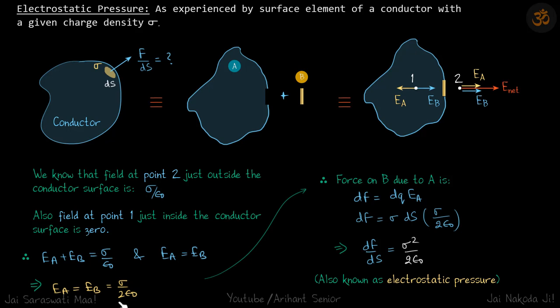This tells us the electric field acting on the small surface element. Now we can write the force on B. The force on element B due to field from A is dq times E_A. Writing dq as sigma times dS, and E_A as sigma by two epsilon, we get dF equals sigma squared dS by two epsilon. Therefore dF by dS equals sigma squared by two epsilon, which is the electrostatic pressure - the force per unit area we wanted to find.